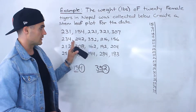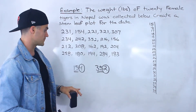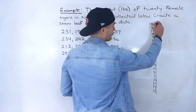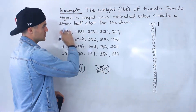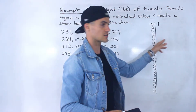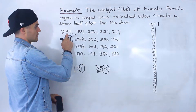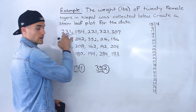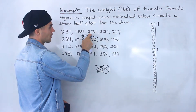Now we can fill in each of the leaves depending on the data. Starting with 154, that gives us a leaf of 4. For 231, we look at the first two digits, 23, which would be the stem, and we put a leaf of 1. We already took care of 154. For 221, that would go in the 22 stem row.